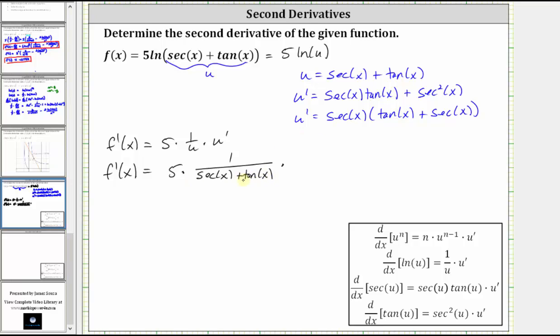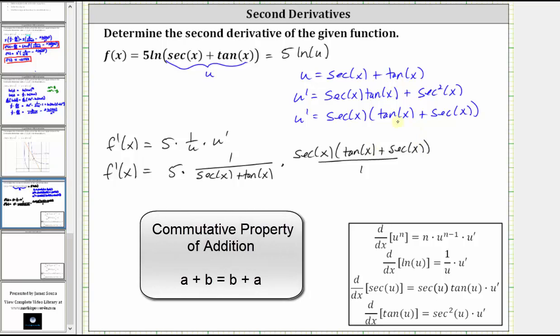Looking at the denominator here, let's write u prime in factored form, which is secant x times the quantity tangent x plus secant x. And as a fraction, we have a denominator of one. And remember, addition is commutative, meaning the order of the addition doesn't change the sum, and therefore we do have a common factor of tangent x plus secant x between the numerator and the denominator.